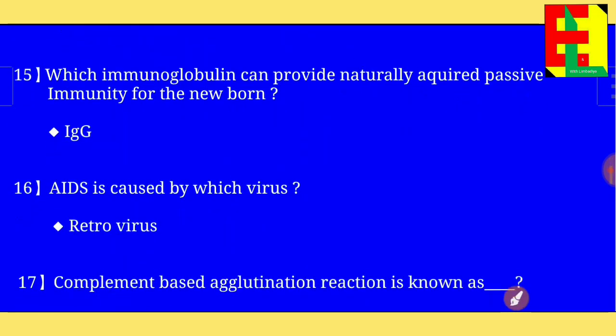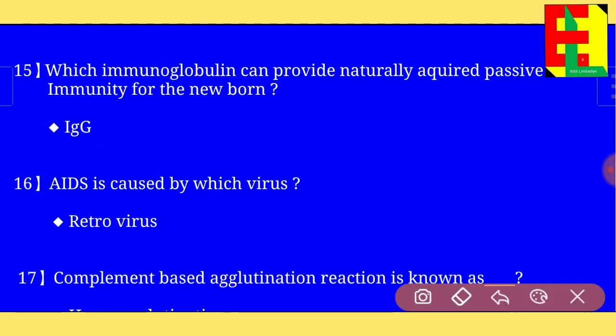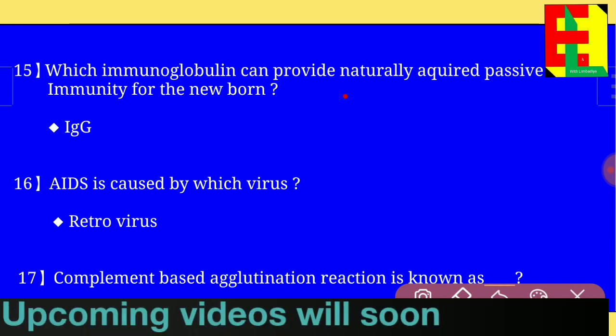Question number fifteen: which immunoglobulin can provide natural acquired passive immunity for the newborn?